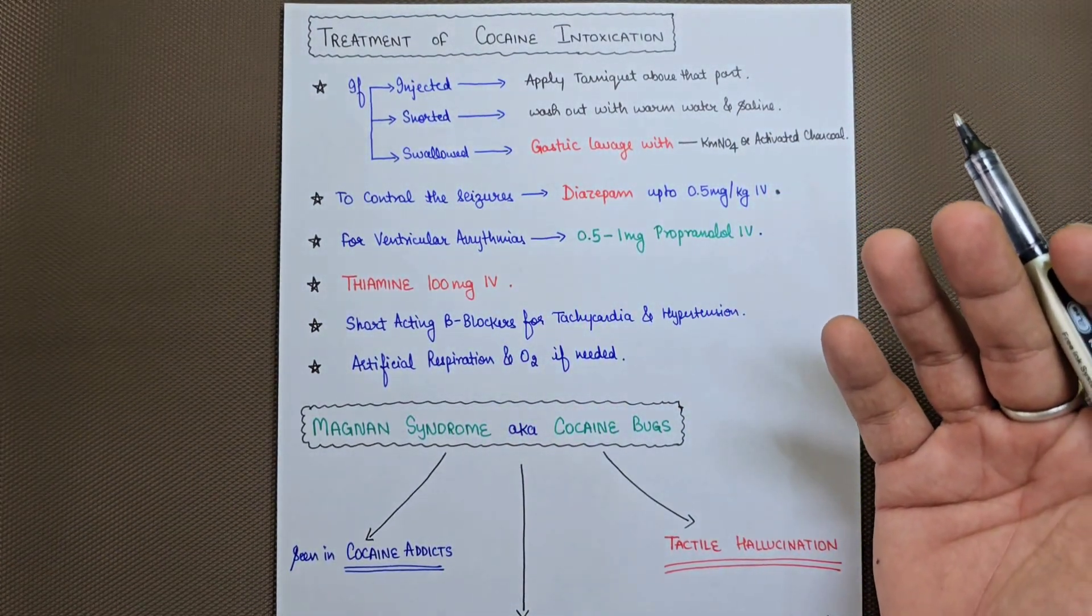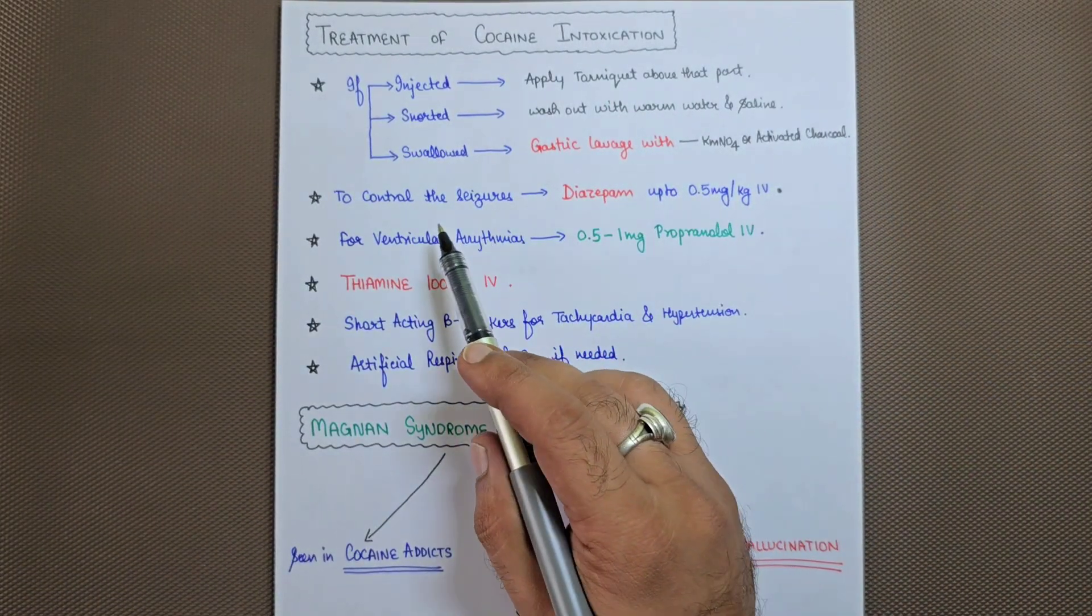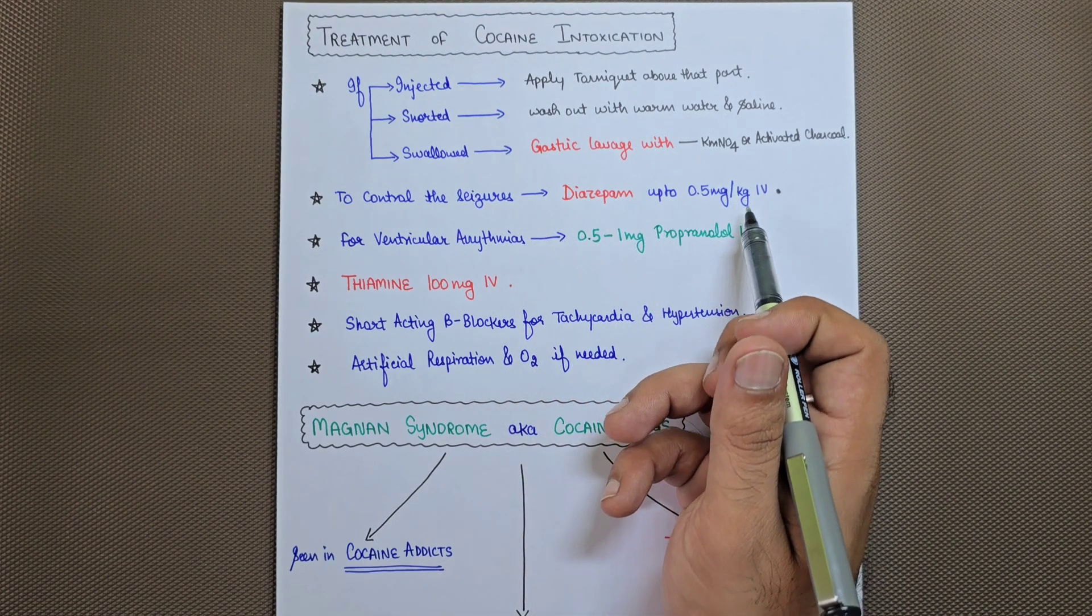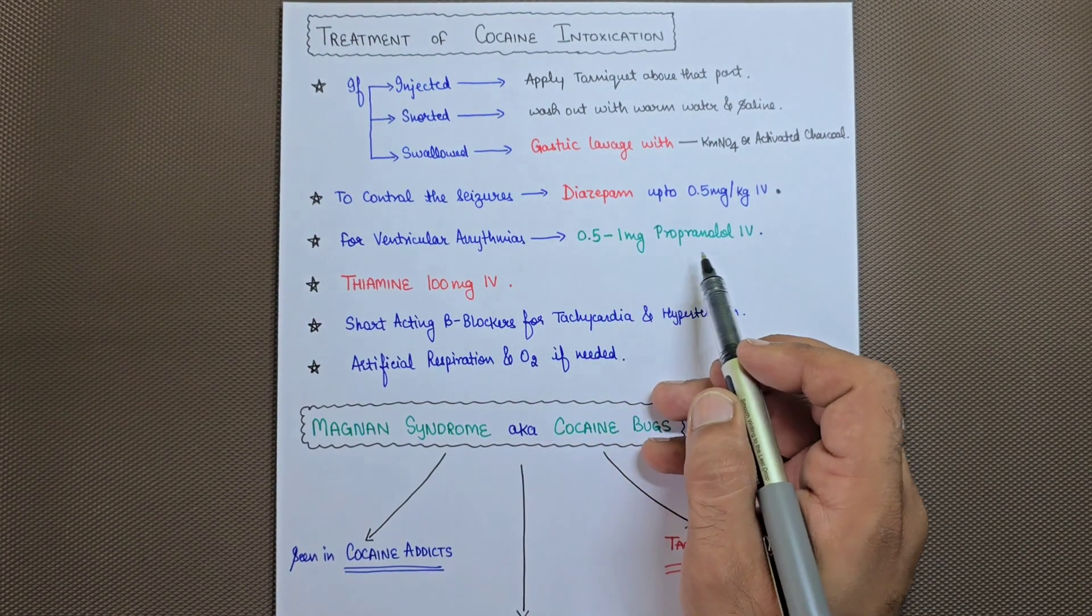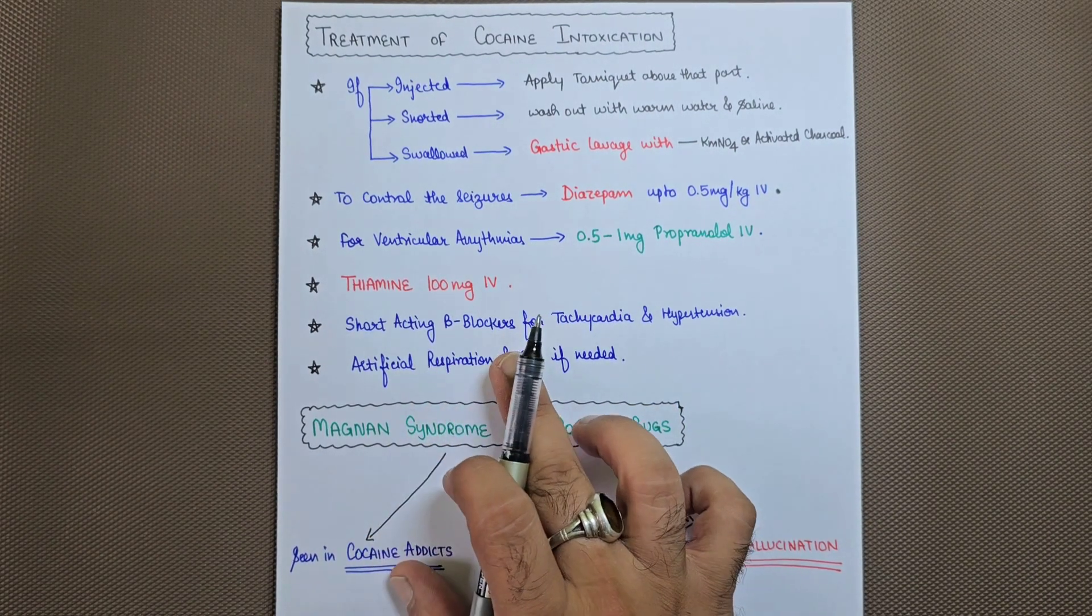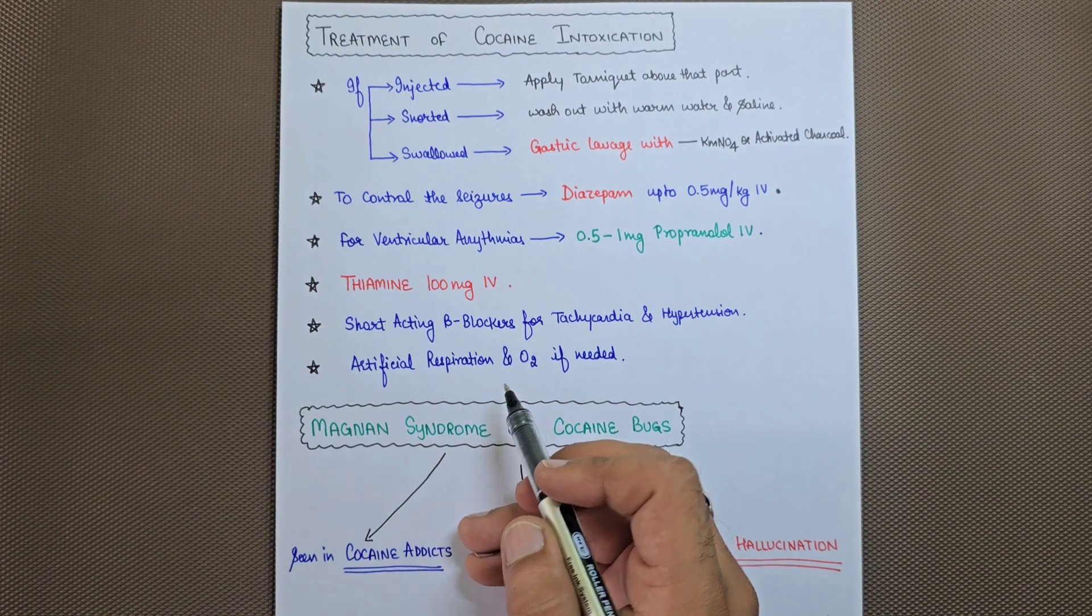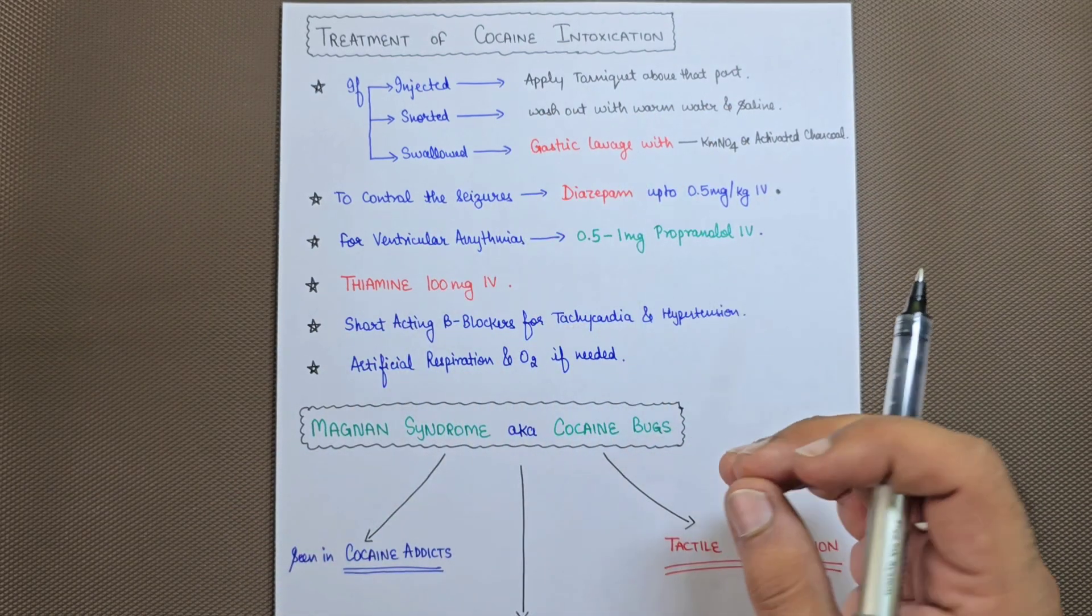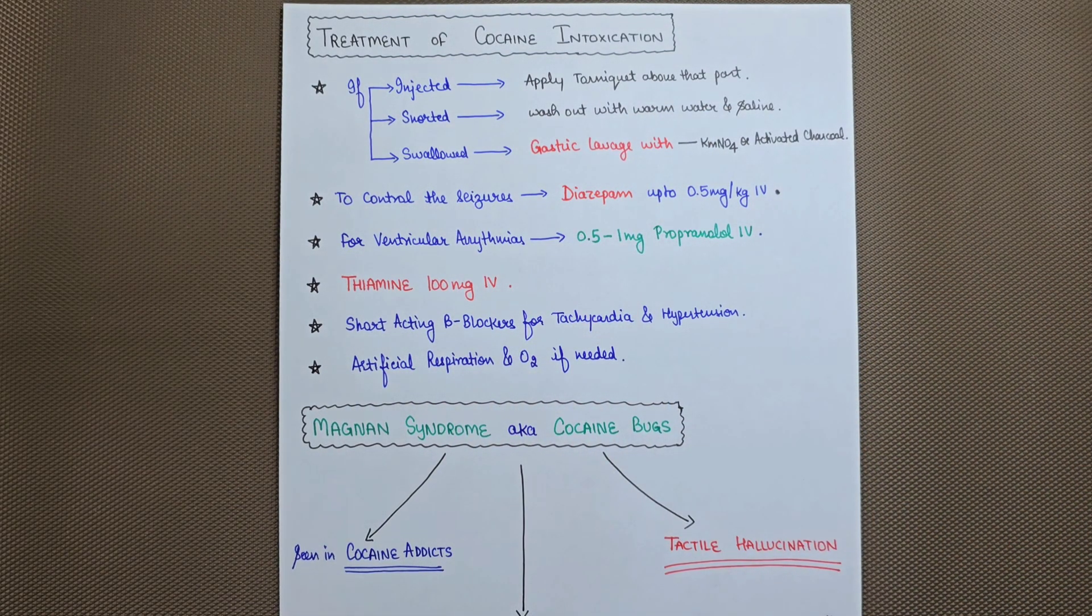Our major approach is to treat each symptom one step at a time. To control seizures, we use diazepam up to 0.5 mg/kg IV. For ventricular arrhythmias, propranolol 0.5-1 mg IV. Thiamine and magnesium IV is also given. Short-acting beta blockers for tachycardia and hypertension, and artificial respiration and oxygen if needed. This is a symptomatic approach in case of cocaine abuse.